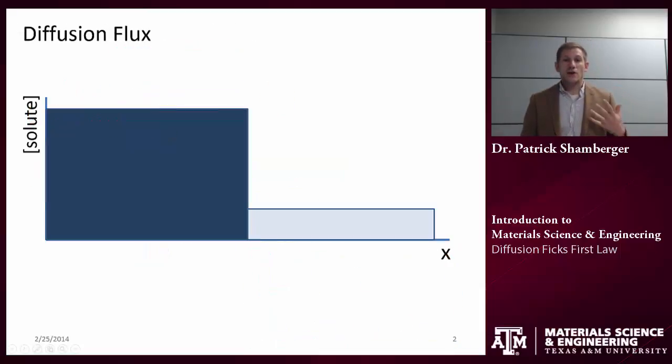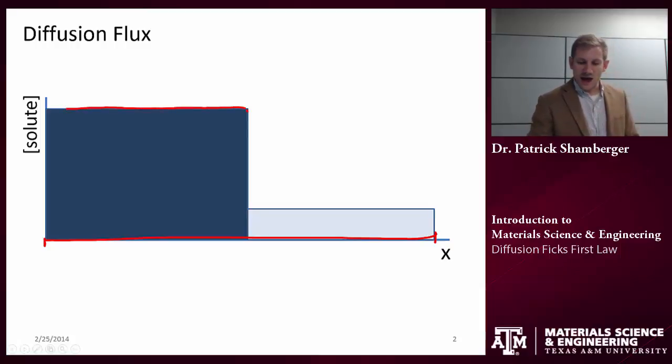So let's think about a solid. Let's say I have a plate of some sort of thickness. So x is going to be my thickness, that's my geometric dimension. And let's say I start off with one half of the plate having a high concentration of some solute phase. This could be hydrogen or it could be carbon or it could be a number of other things. And let's say the other half has a lower concentration.